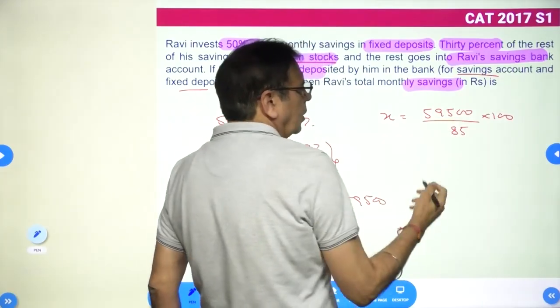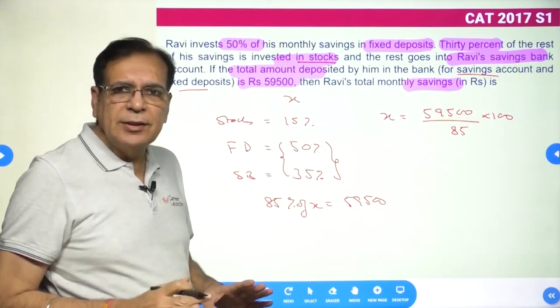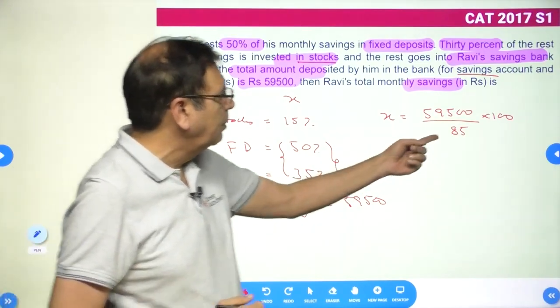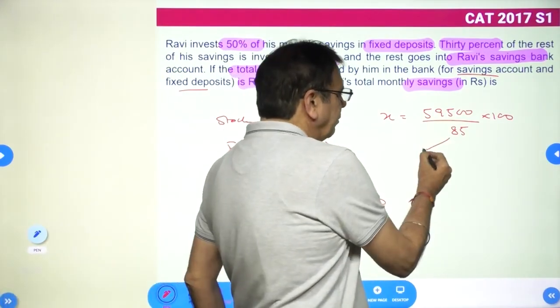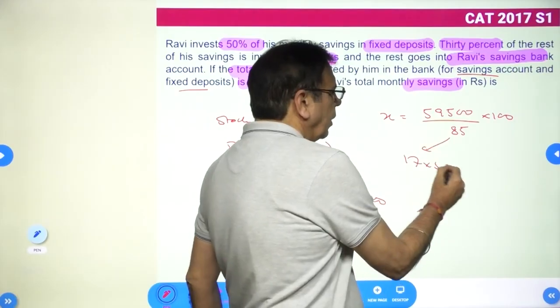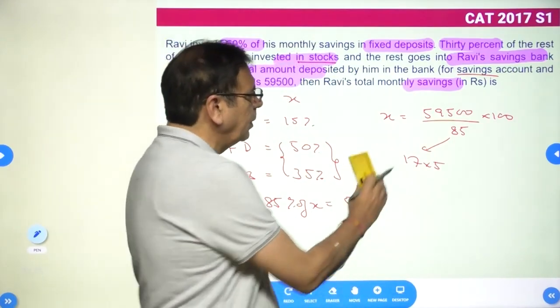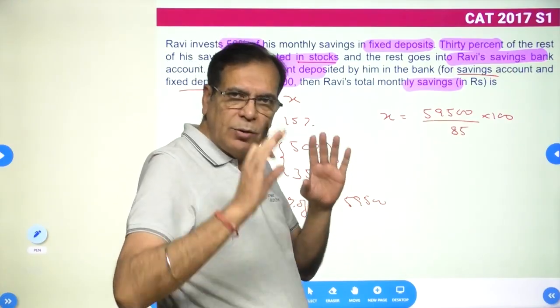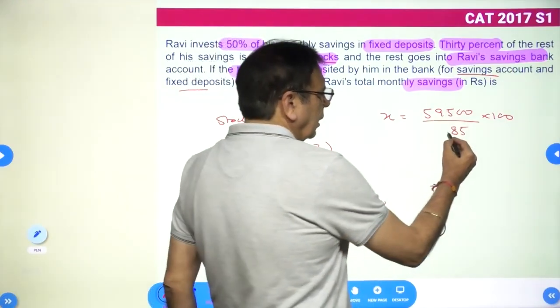If the answer is an integer, that means 59,500 should definitely be a multiple of 17, because 85 is nothing but 17 × 5. So it has to be a multiple of 5 as well as 17. 59,500 should be a multiple of 85.